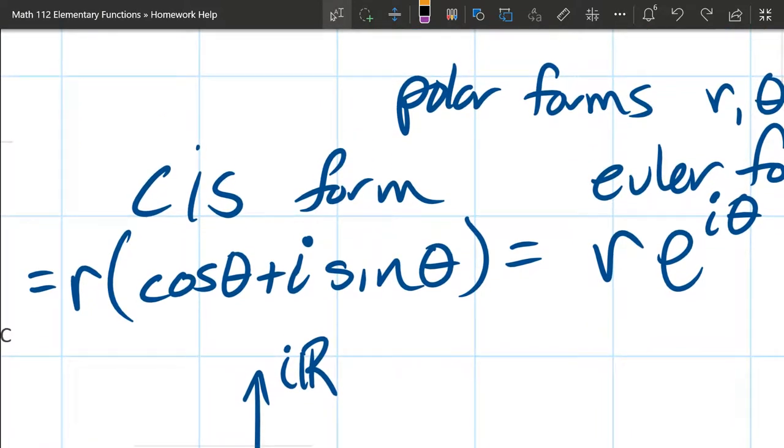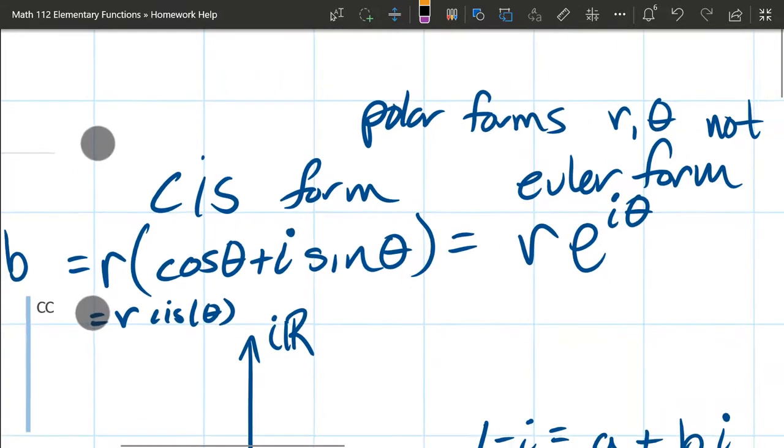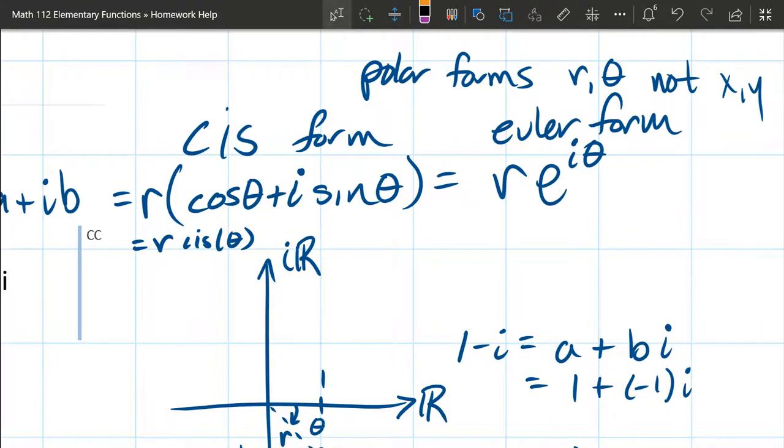There is another way to write the CIS form. This big function right here, you can write it as r times CIS theta, which stands for cosine i sine, which is written right above. So that's another way to write the CIS form. Your book uses the CIS form, but I strongly recommend you go with Euler form, much less writing.